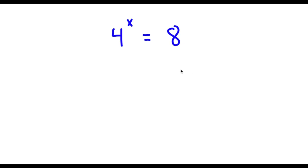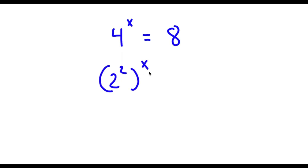Alright, so I have 4 to the power of x is equal to 8. To solve this problem, first off 4 — this is the same thing as 2 squared. So now I have 2 squared to the power of x is equal to 8. Now 8, this is the same thing as 2 to the power of 3.